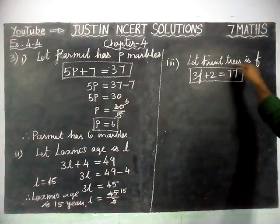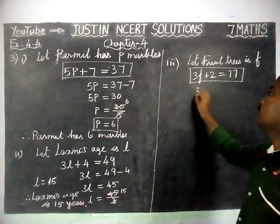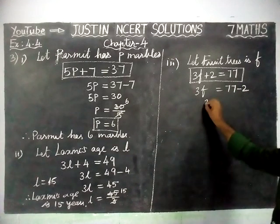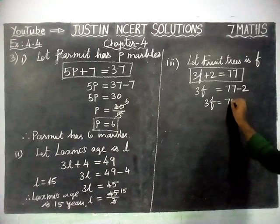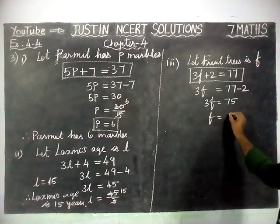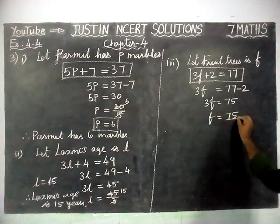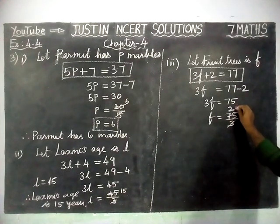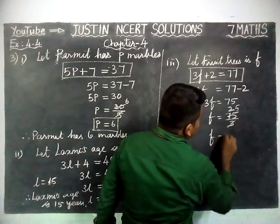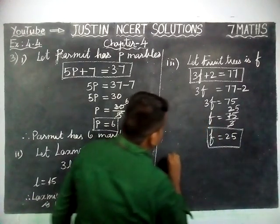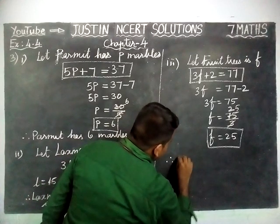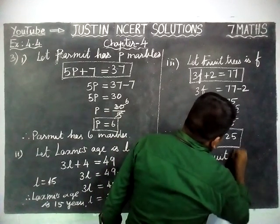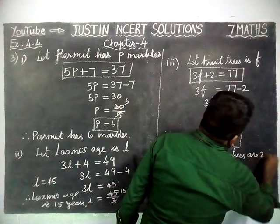Now, 3F + 2 = 77. 3F = 77 − 2, this plus 2 is going to the right-hand side so minus 2. 3F = 77 − 2 = 75. F = 75 ÷ 3, because this multiplication is going to the right-hand side so it becomes division. 25 threes are 75, so F = 25. Therefore, the number of fruit trees is 25.